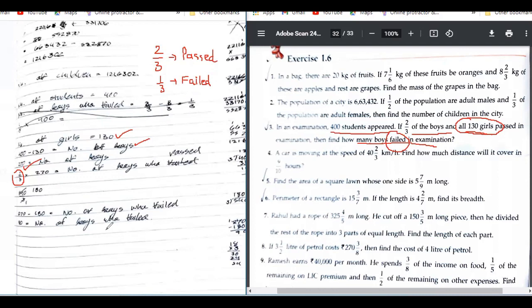Yes. If I do one by three of boys, one by three. We will get 90 directly. Yes. We will get 90 directly. This is also correct.